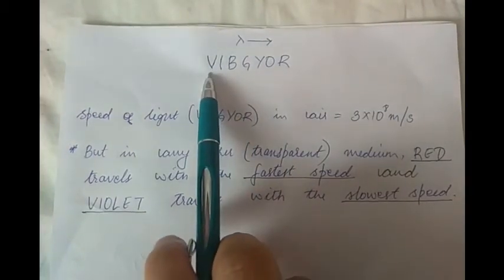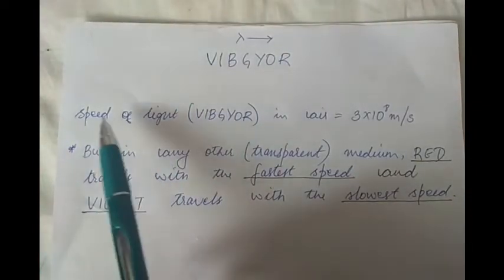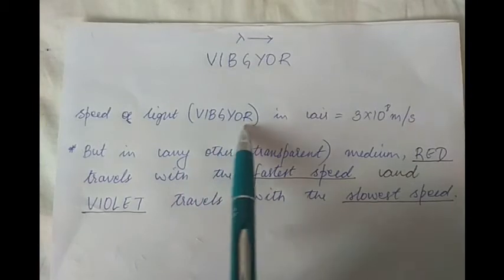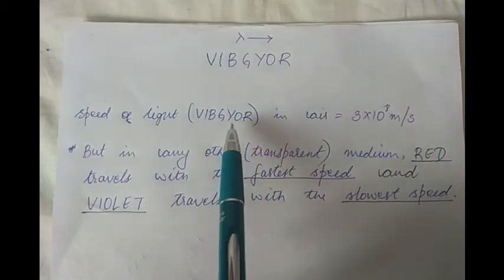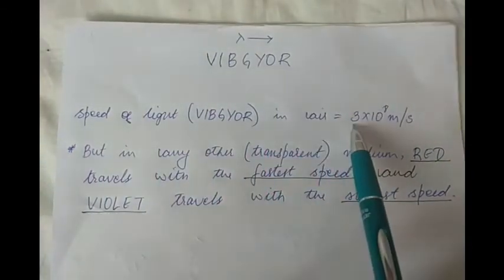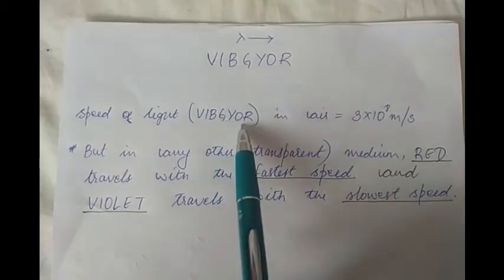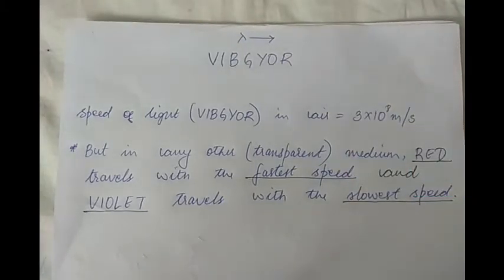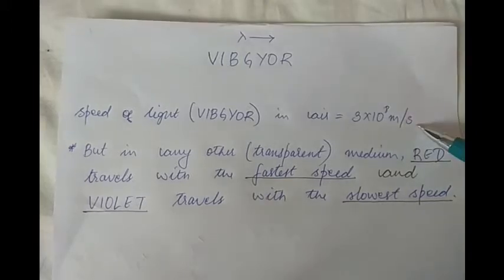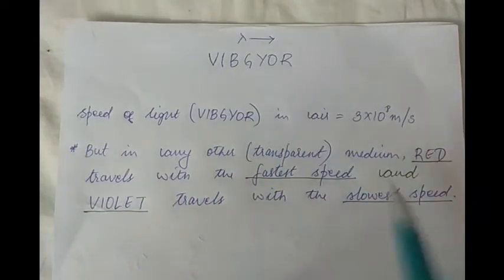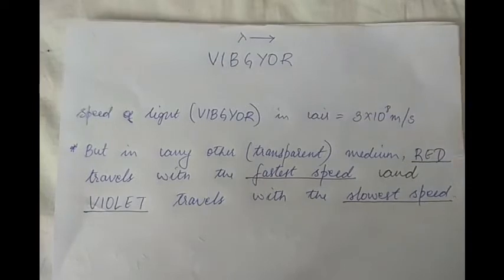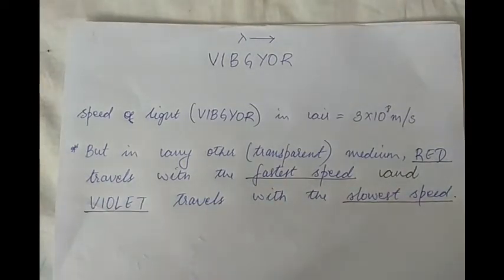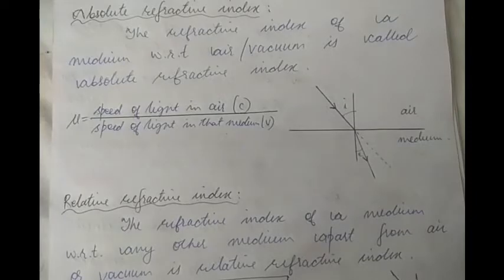All colors of light — VIBGYOR — travel with the same speed in air, which is 3 × 10⁸ meters per second. But in any other transparent medium, red travels with the fastest speed and violet travels with the slowest speed. Keep this in mind: red travels with the maximum speed and violet travels with the least speed in a transparent medium other than air.